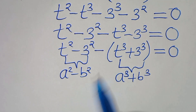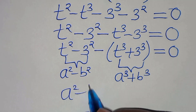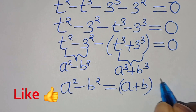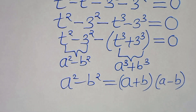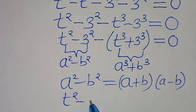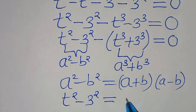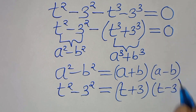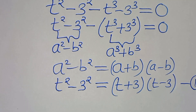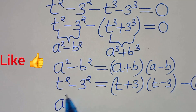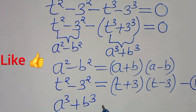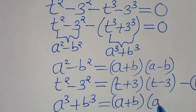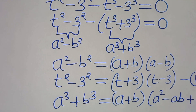The next step is that from the difference of two squares, a squared minus b squared, this can be expressed as (a plus b)(a minus b). So t squared minus 3 squared can be expressed as (t plus 3)(t minus 3). Let's call this equation 1. The second part, a cubed plus b cubed, can be expressed as (a plus b)(a squared minus ab plus b squared).